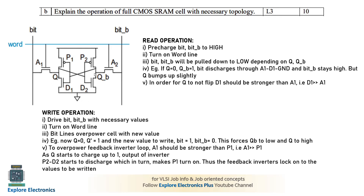In the six transistors, P1 and D1 make one inverter, and P2 and D2 make another inverter. The input of the P1/D1 inverter is connected to the output of P2/D2, and the output of P1/D1 is connected to the input of P2/D2. This means if the output Q of the P1/D1 inverter is 0, the output of the second inverter will be 1, and vice versa.